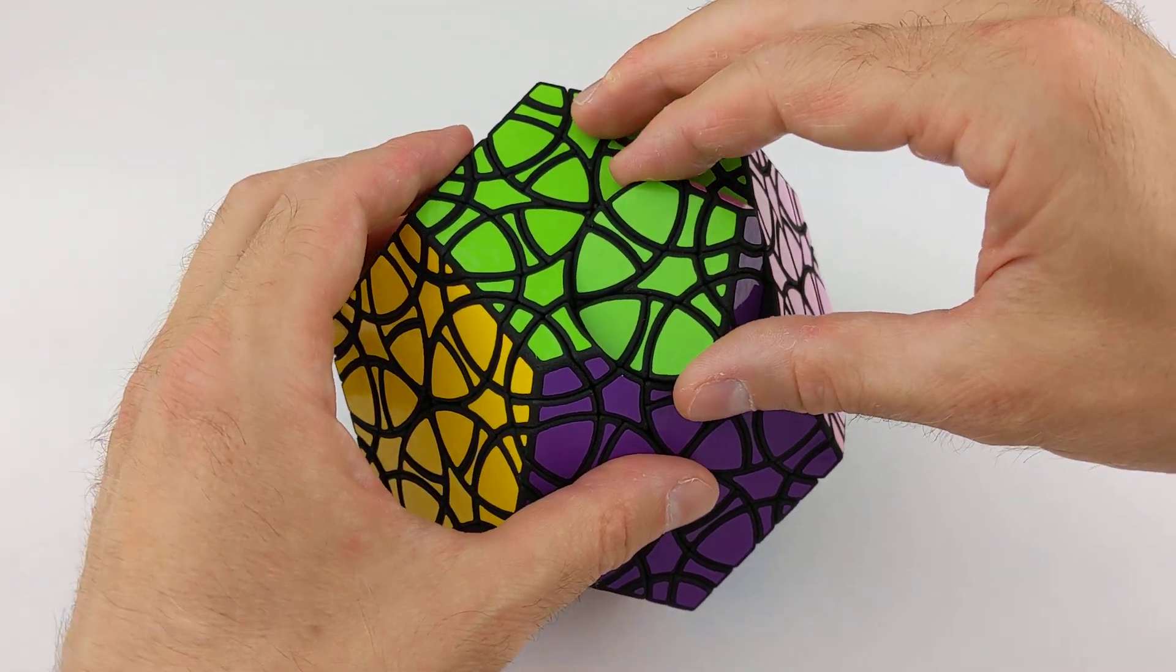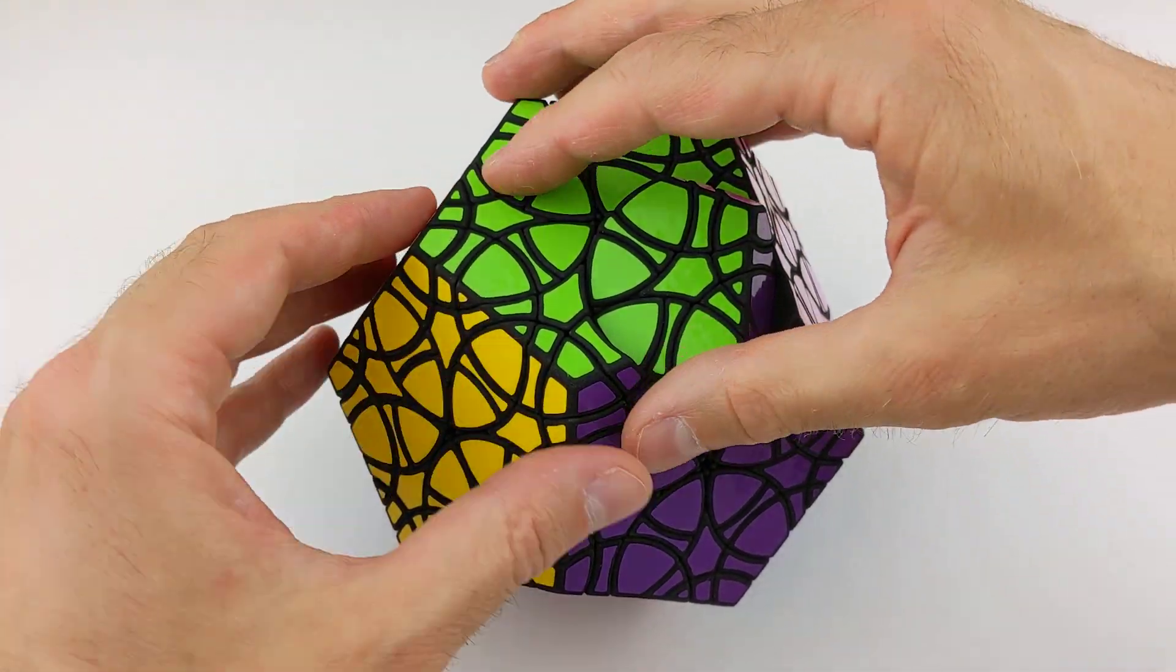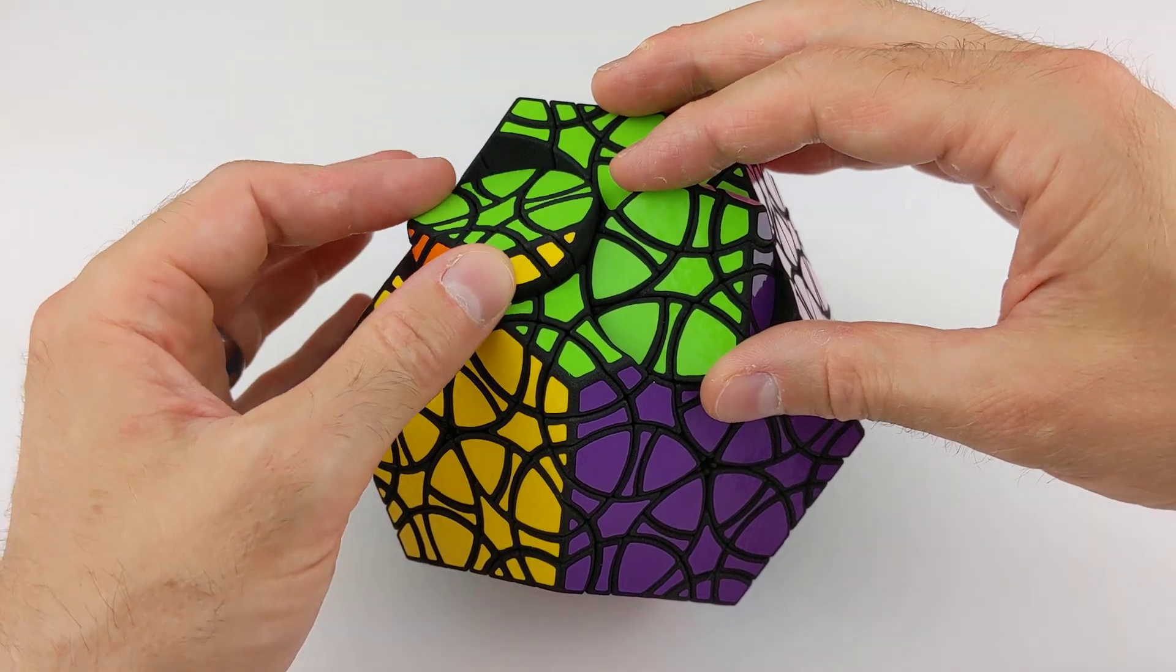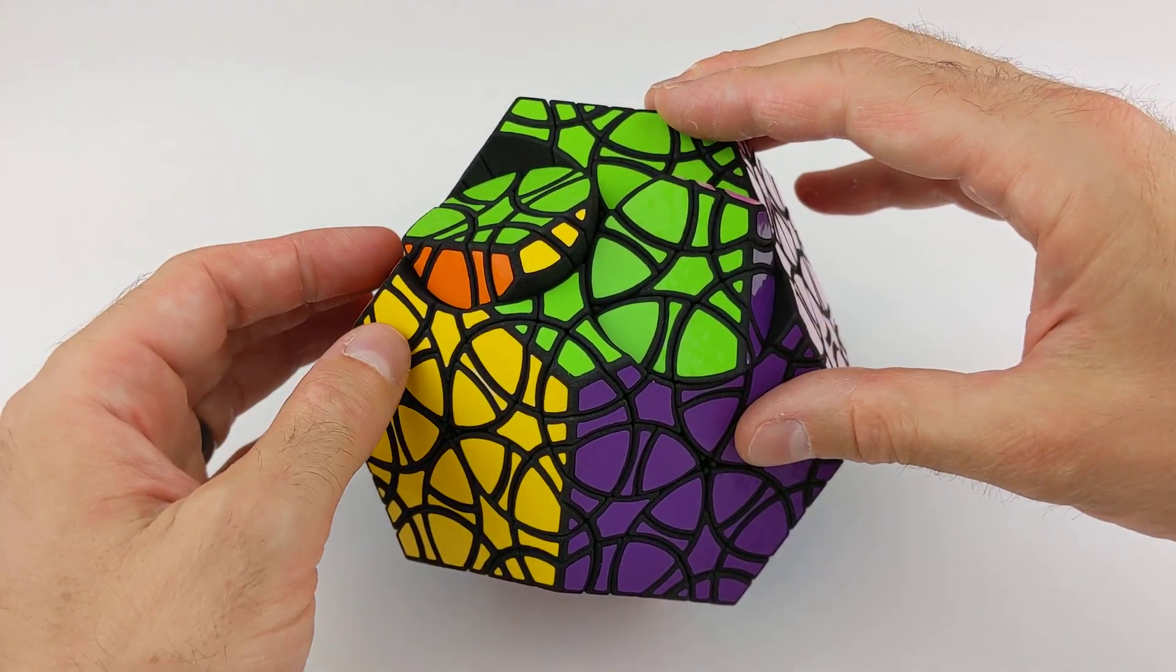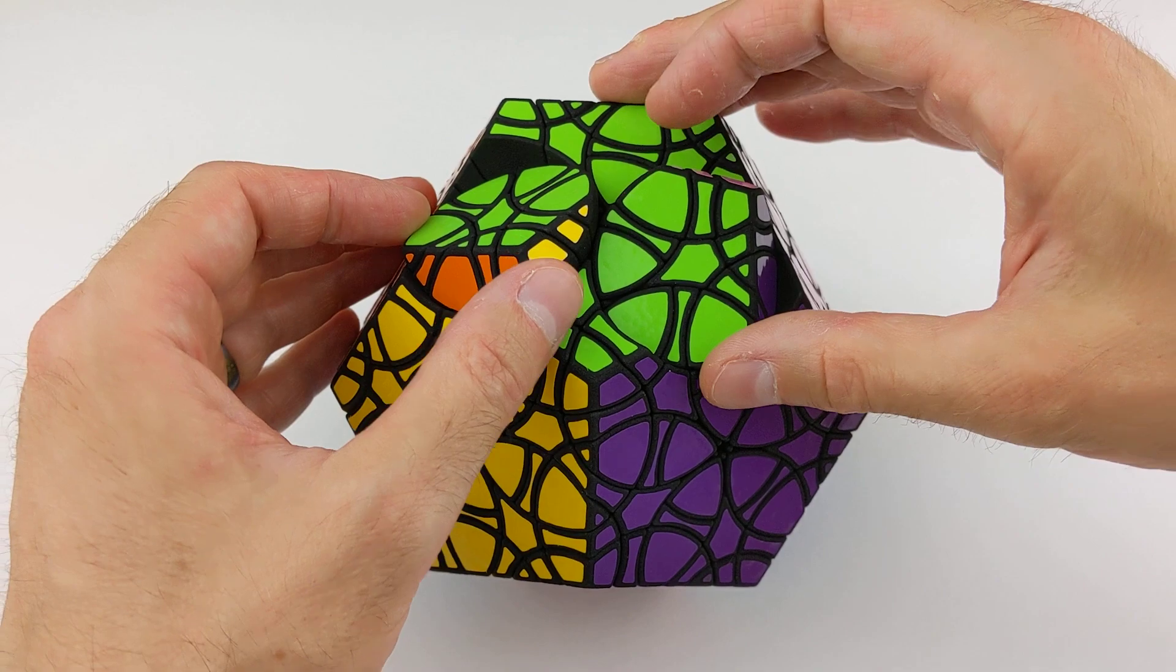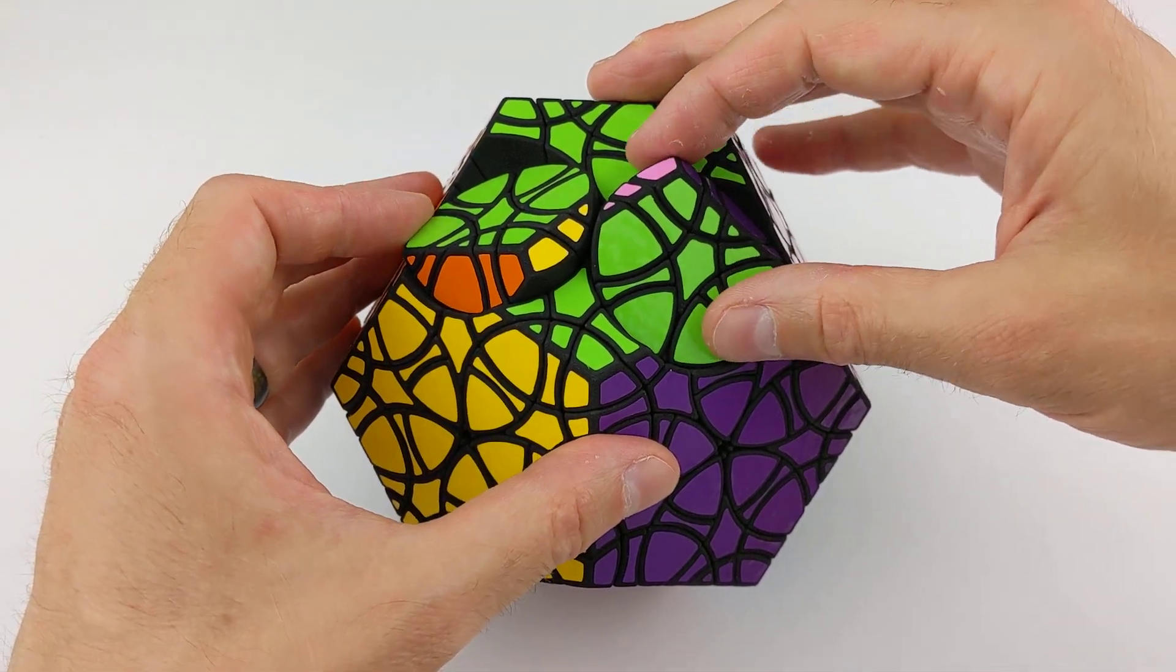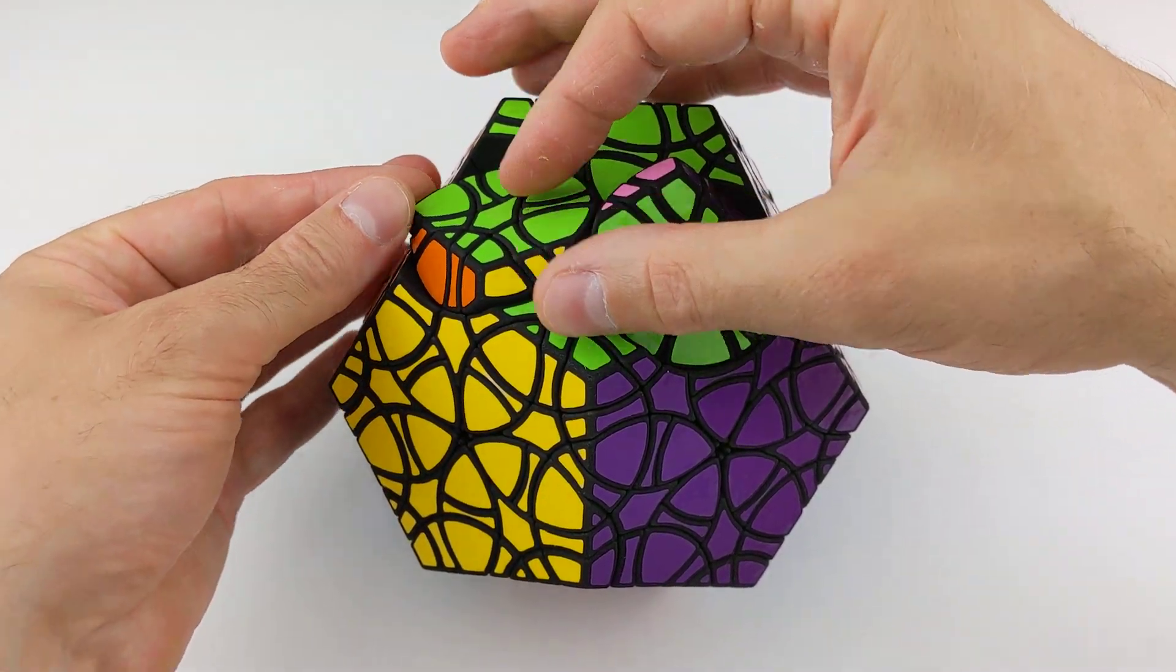In addition, one of the nice things about the Andromeda Dodecahedron versus the Andromeda Cube is that you can turn two axes on the same face at the same time, and if you have everything lined up right,